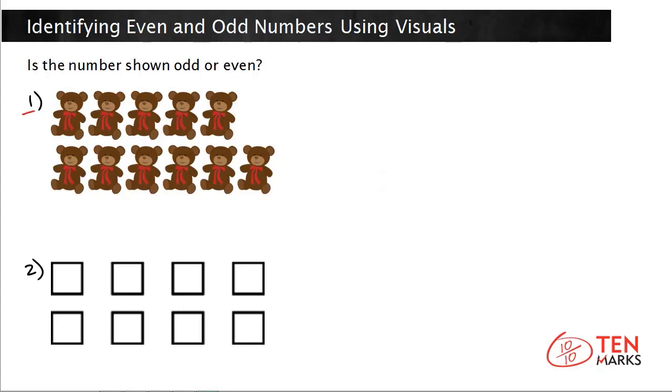Let's take a look at the first problem. In this problem, there are two rows of teddy bears. The first row has 5 teddy bears and I'm going to count them out for you here. And the second row, let's count them in blue, has 1, 2, 3, 4, 5, 6 teddy bears.